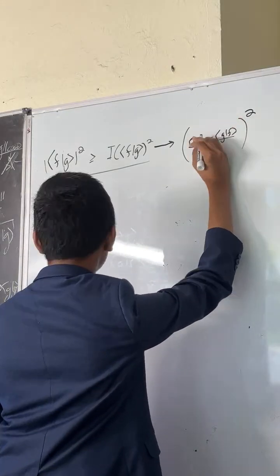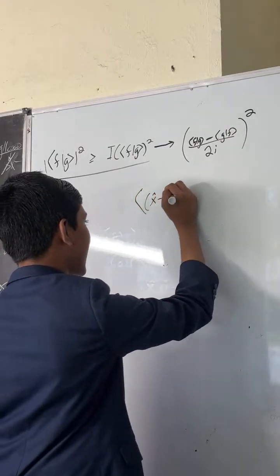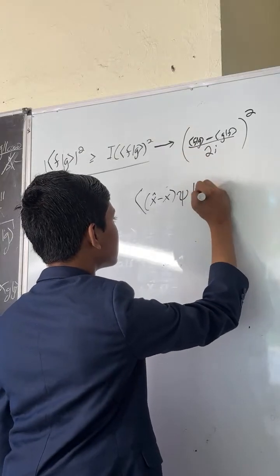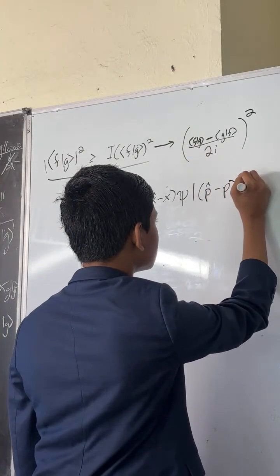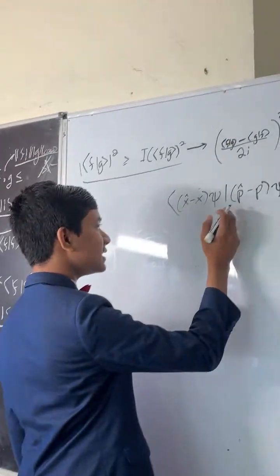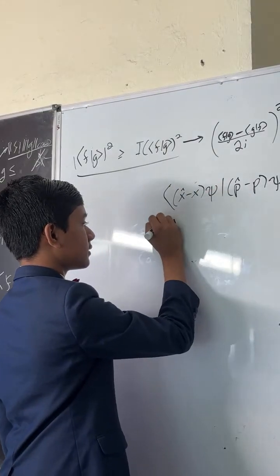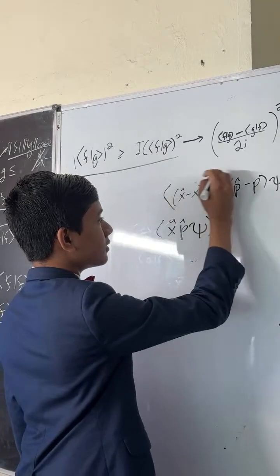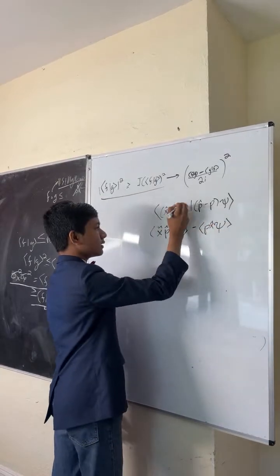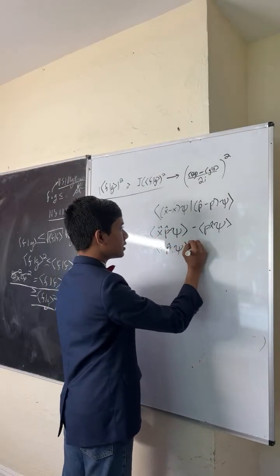Now, how do we approach this? Well, what is f dot g? You get x hat minus x psi times p hat minus p psi. So how do we actually go about writing this out? Well, we use the distributive property, so this becomes x hat p hat psi minus x hat p psi minus x p hat psi plus x p psi.